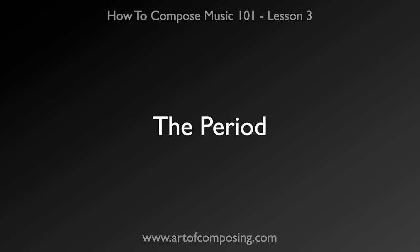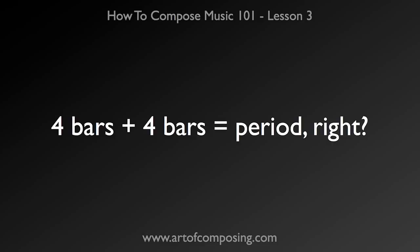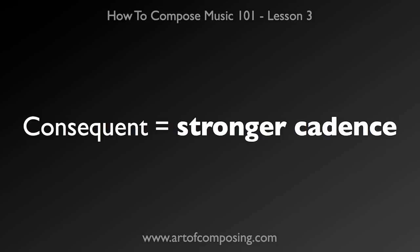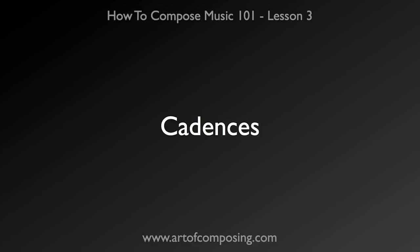Most people who have studied music theory have come across a definition of the period, but I've found that most of these definitions don't give you good guidance on how to actually write one. The main feature that most of these theory classes and books talk about is that the antecedent ends in a weak cadence, normally a half cadence, and the consequent ends in an authentic cadence. A cadence is a specific way of ending a phrase harmonically. There are several different types of cadences, but today we're only going to talk about the half cadence and the authentic cadence.